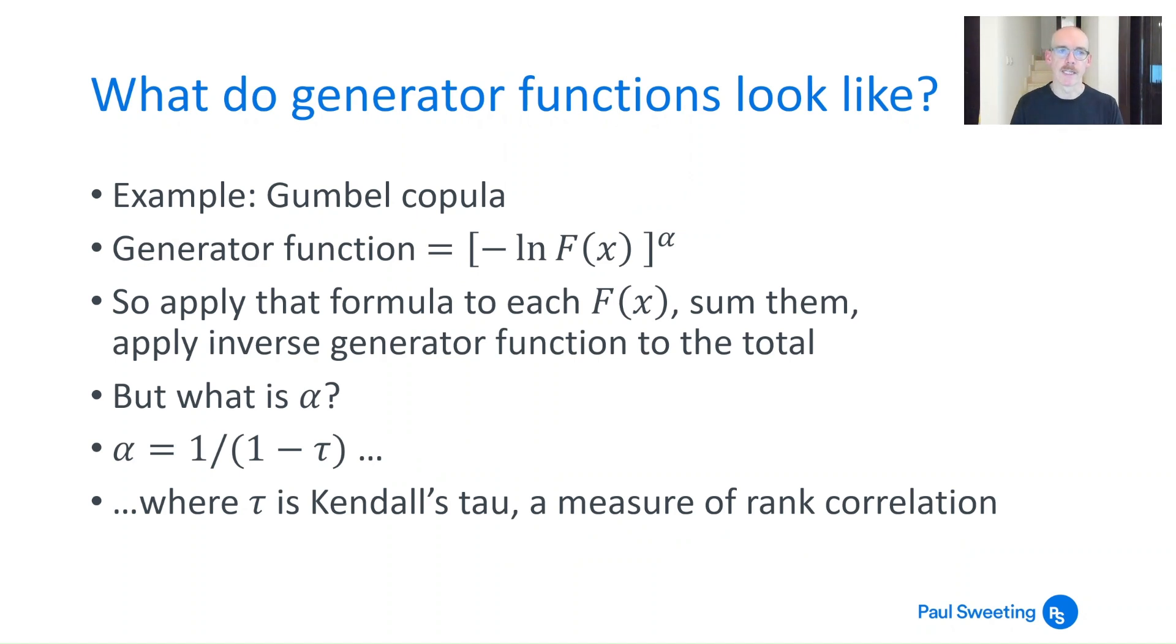So what do generator functions look like? Gumbel copula generator function is minus log of the distribution function raised to the power of α, so that's what you apply to each of the F(x)s and then the inverse of that to get back again. And α is defined in this case as 1 over 1 minus τ which is Kendall's tau which is a measure of rank correlation.